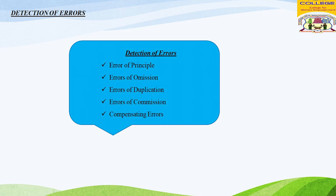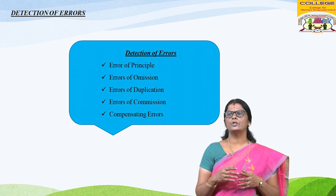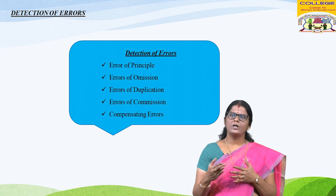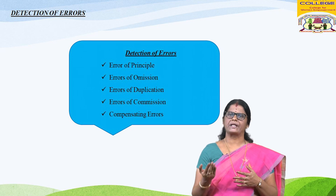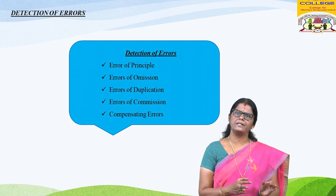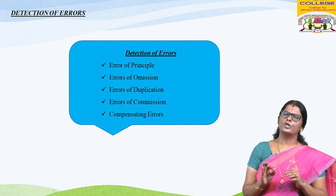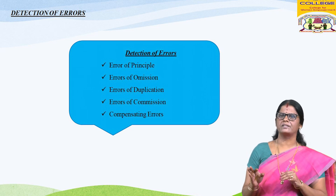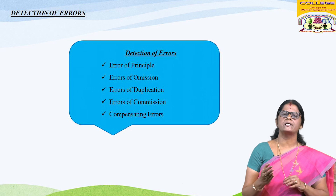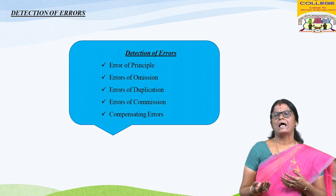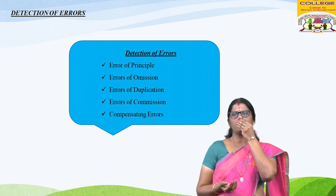Compensating errors occur when the effect of one error compensates with another error. Such errors do not affect the trial balance. For example, the total of a debit account as well as a credit account are both short by Rs. 7,500 — this type of error compensates both.